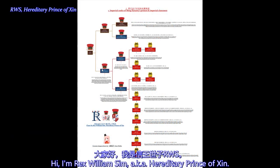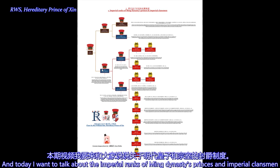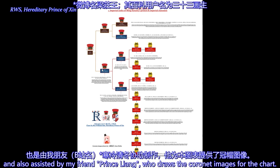Hi, I'm Rex William Sim, aka Harry D3, Prince of Sin. This is my first explanation video of my self-made chart, and today I want to talk about the imperial ranks of Ming Dynasty Princes and Imperial Clansmen. This chart is made by me and also involved the assets of my friend, Prince Liang, who drew the coronet images for the chart.